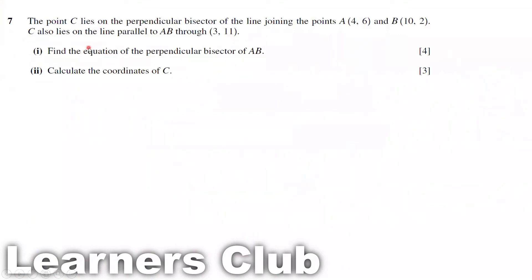The point C lies on the perpendicular bisector of the line joining point A with coordinates 4 comma 6, and B 10 comma 2. C also lies on the line parallel to AB through 3 comma 11. The first question asks us to find the equation of the perpendicular bisector of AB.